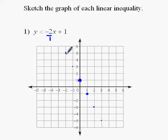I'm going to ask myself what kind of line do I need to draw here — a dashed line or a solid line? Because this is just a less than, not less than or equal to, I need a dashed line. If it was or equal to, y equals negative 2x plus 1 would give you a solid line. It doesn't have equals, so we don't need a solid line. We're just going to do a dashed line.